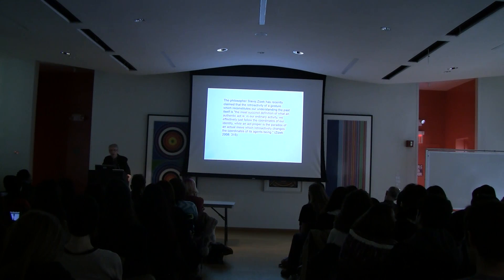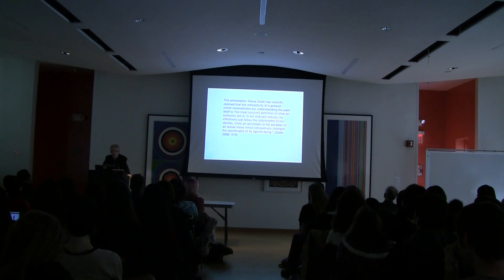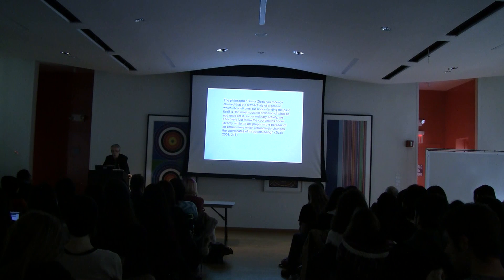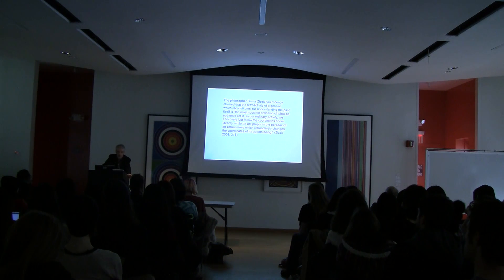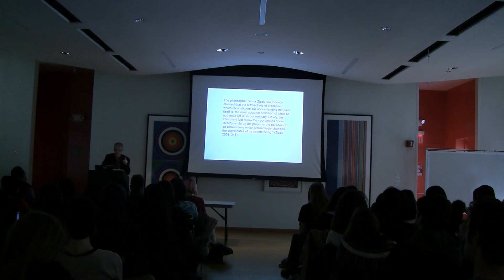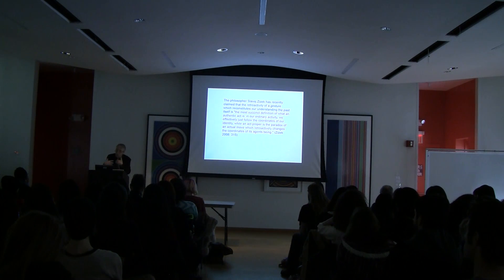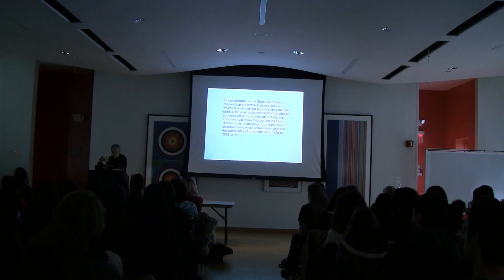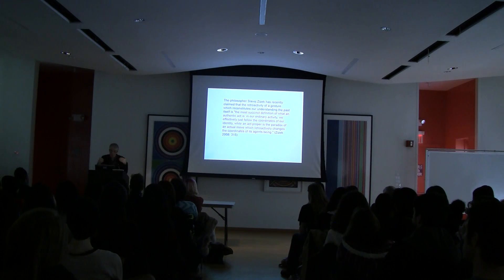The philosopher Žižek has recently claimed that the retroactivity of a gesture which reconstitutes our understanding of the past is the most succinct definition of what an authentic act is. In our own reactivity we effectively just follow the coordinates of our identity — the historical coordinates of our identity. What an act proper is, is the paradox of a move which retroactively changes the coordinates of its agent's being. What Žižek is getting at is that we are not simply determined by the past — history is always a story we tell about ourselves.